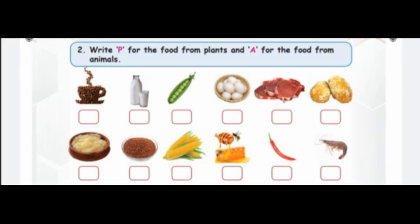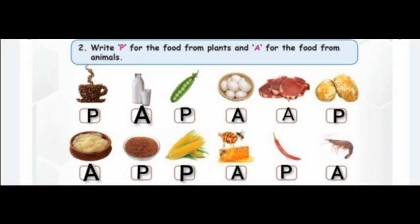Here is your homework. Write P for food from plants and A for food from animals. Options: tea — plant, milk — animal, peas — plant, eggs — animal, meat — animal, jaggery — plant, ghee — animal, ragi or finger millet — plant, corn — plant, honey — animal, chillies — plant.